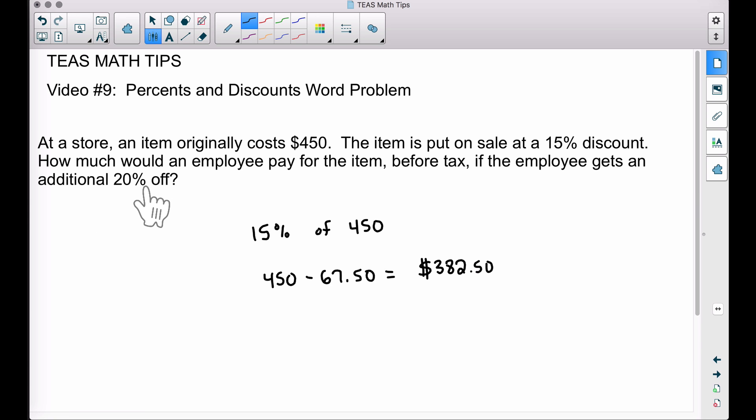Now back to the employee. The employee gets an additional 20% off, so we have to repeat this process, except we're going to find 20% of this number and we're going to subtract that from this number to figure out how much the employee would pay before tax.